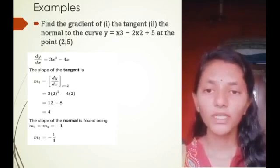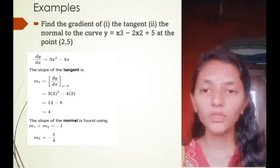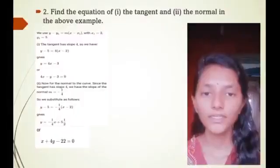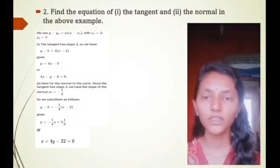The slope of the normal is found using m1 × m2 = -1, so m2 = -1/4. Next example is find the equation of the tangent and normal in the above example.